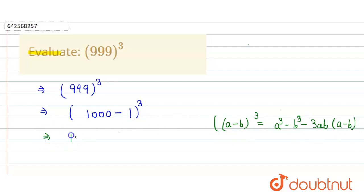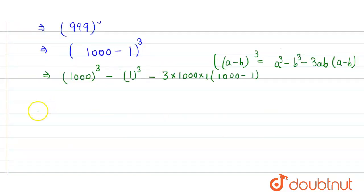So here we get is equal to 1000 cube minus 1 cube. Minus, here this part is a and this part is b, so here we get 3 times a times b. That will be 3 times 1000 times 1, in bracket it will be 1000 and then minus 1. So now we simply solve it.